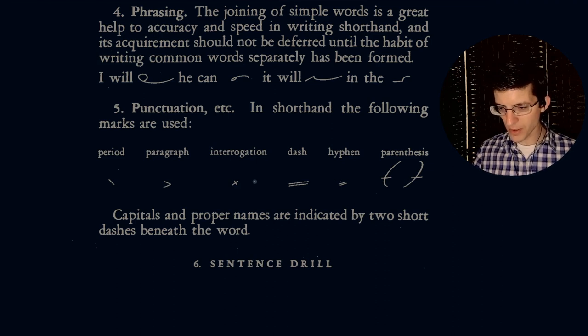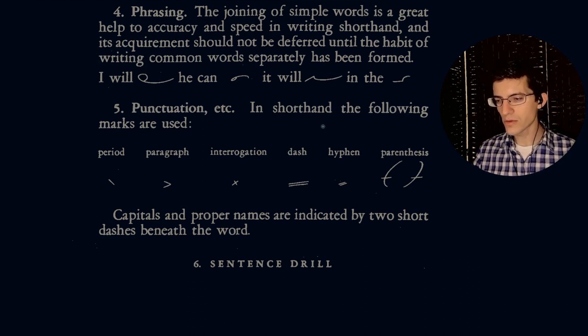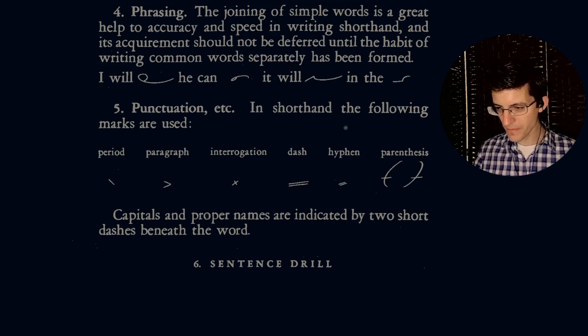Capitals and proper nouns are indicated by two short dashes beneath the word. So let's say, for instance, is someone's name Cam. We actually know all the letters for that. So Cam for Cameron, like Cameron Haynes, the long distance runner. If I write that and I want to make it a proper name, then I put two strokes under it. So that would be Cam.